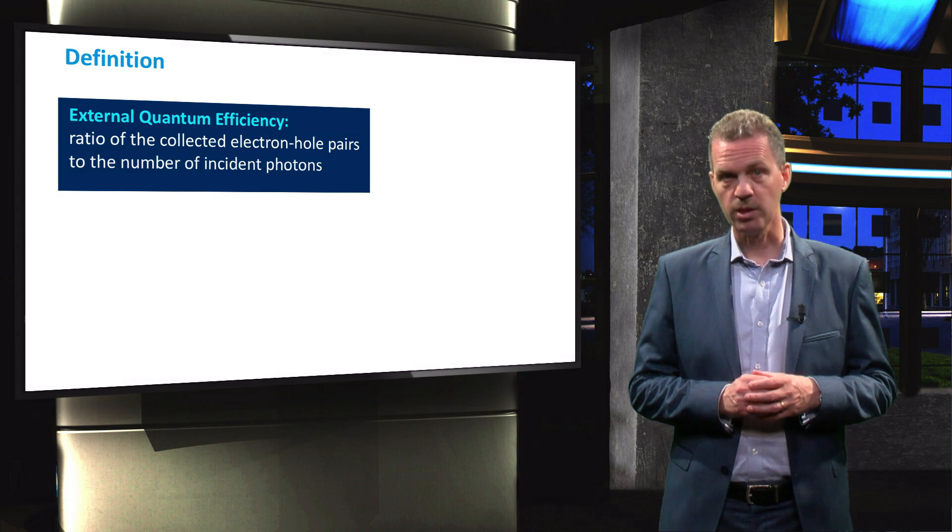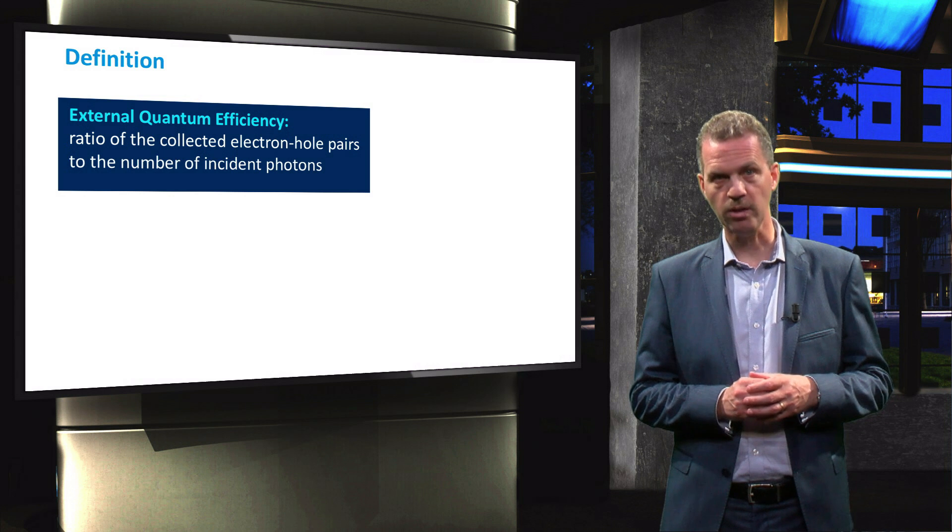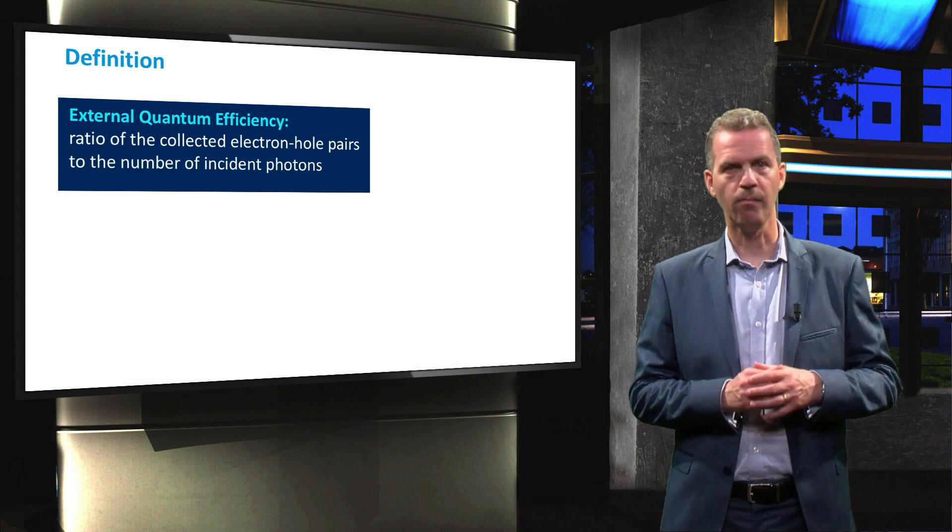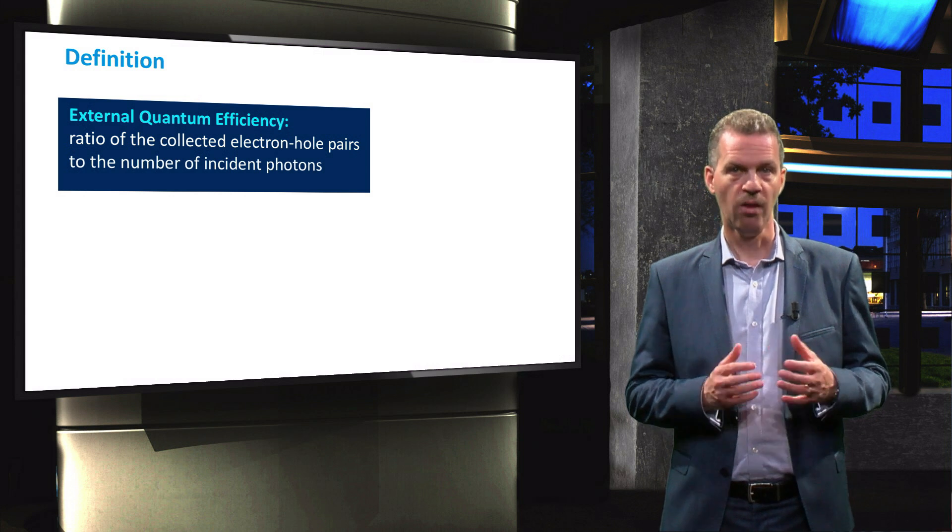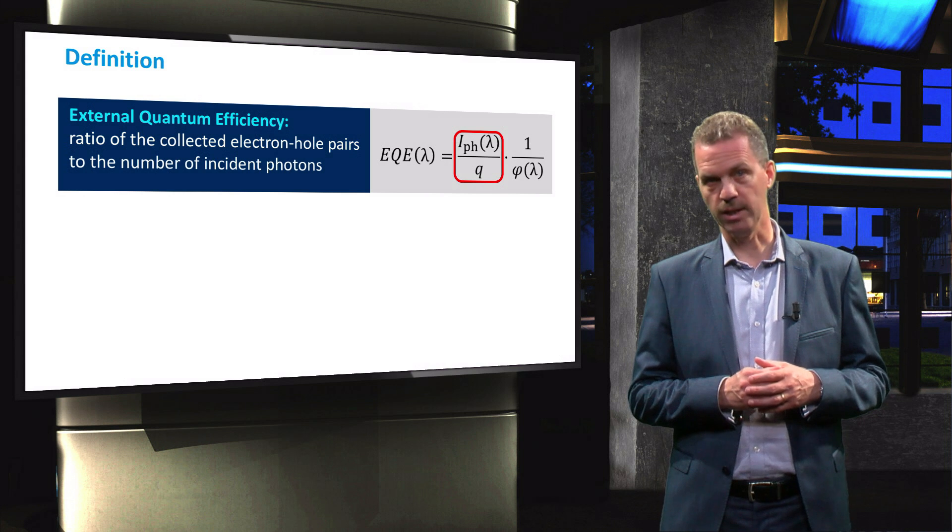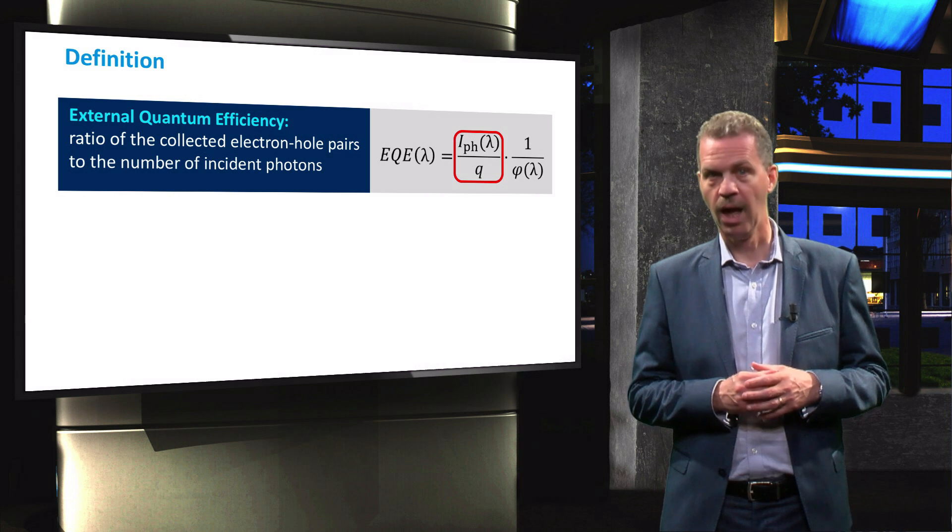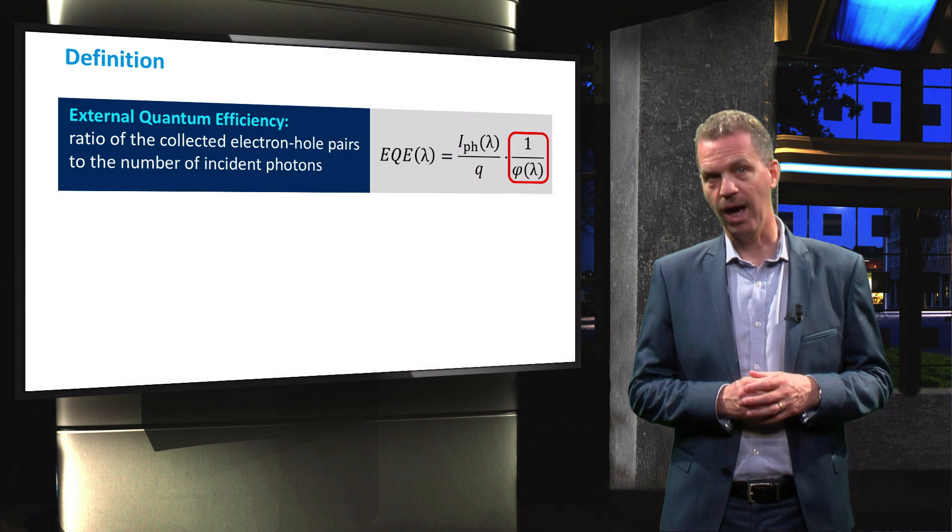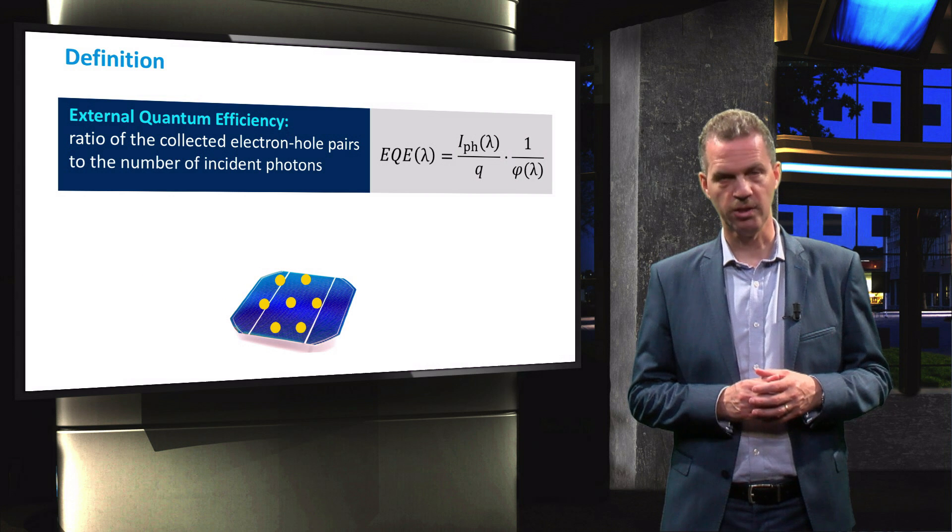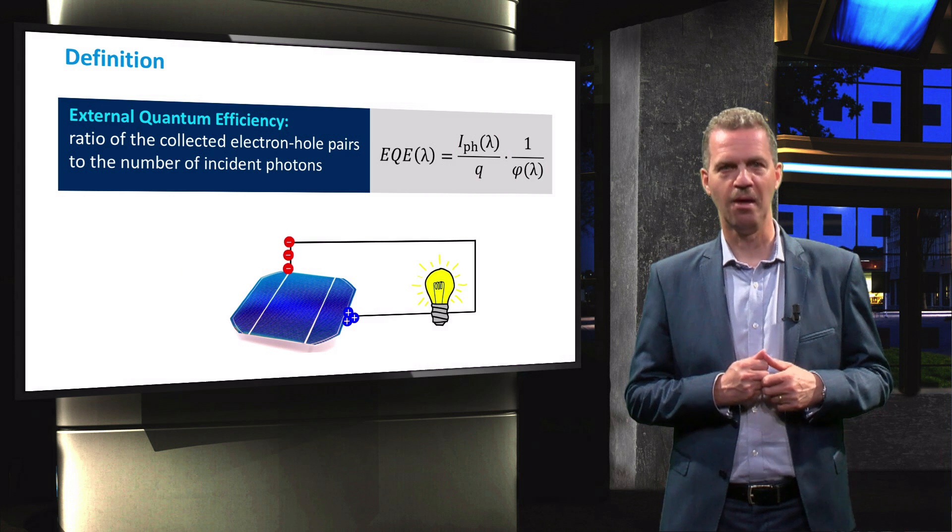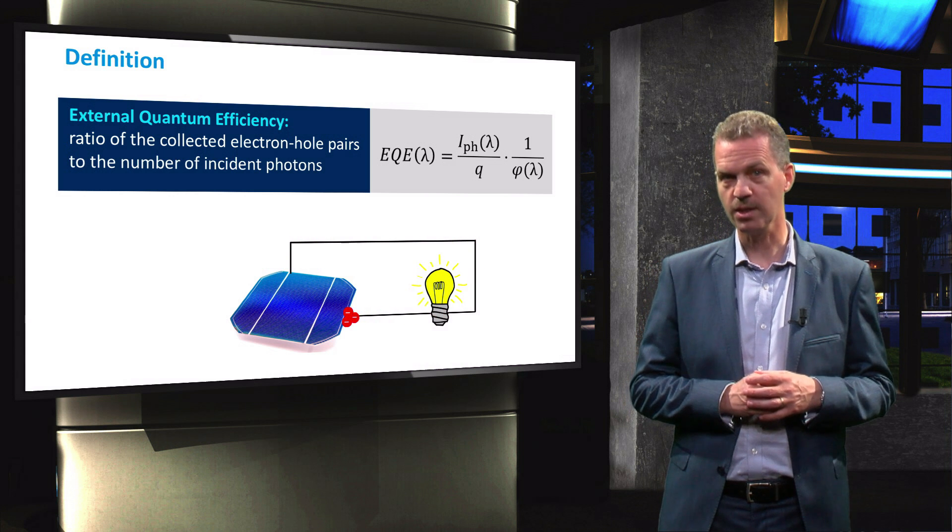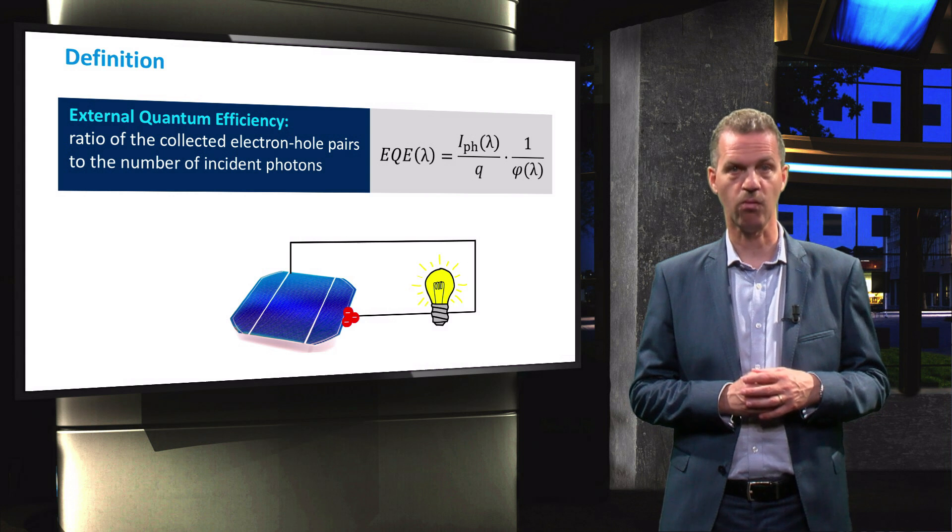The external quantum efficiency of a solar cell is the ratio per time unit of the collected electron-hole pairs at the terminals of the cell to the number of photons incident on the cell. This equation relates to the charge carrier flux, which is the photocurrent divided by the elementary charge Q, and the photon flux phi for every wavelength. For example, these seven yellow photons are incident on the solar cell. Three electron-hole pairs are collected at the terminals of the device, meaning that the EQE of the solar cell at the wavelength of the yellow photons is three-sevenths.